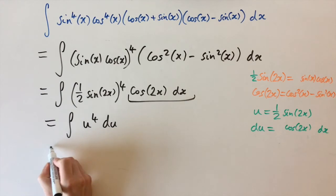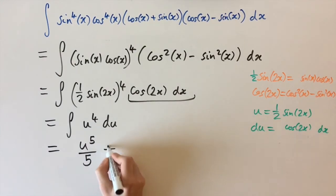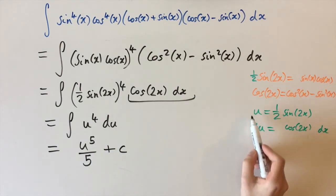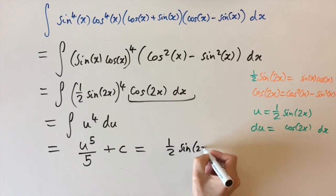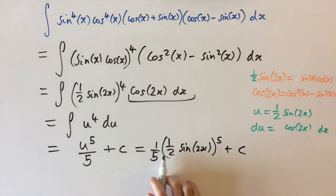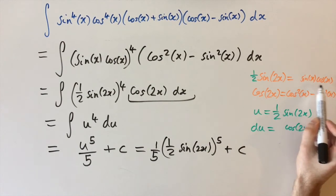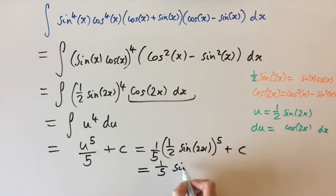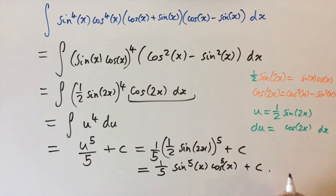We know how to integrate this — we raise the power by 1 and divide by the new power, giving u to the power of 5 divided by 5, plus c. The last step is to replace u by the function we defined in terms of x, so replace u by half sine 2x. We get one fifth times half sine 2x, all to the power of 5, plus c. And as a final simplification, using our earlier result that half sine 2x equals sine x times cosine x, this is equivalent to one fifth times sine to the power of 5 of x times cosine to the power of 5 of x plus c. So this is our answer.